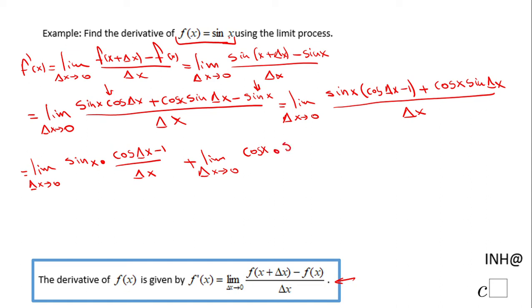And now let's take a look at these two limits. This one here is zero, approaches zero as delta x gets closer to zero. So I have sine of x...